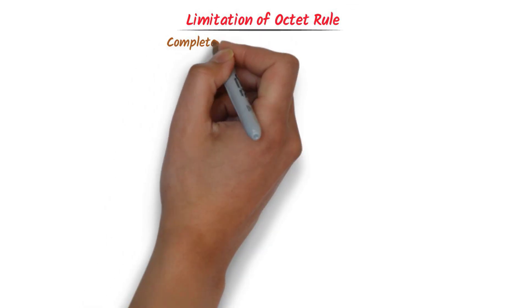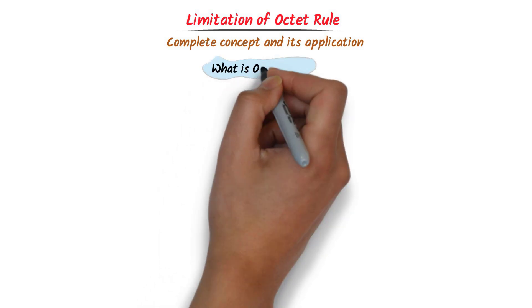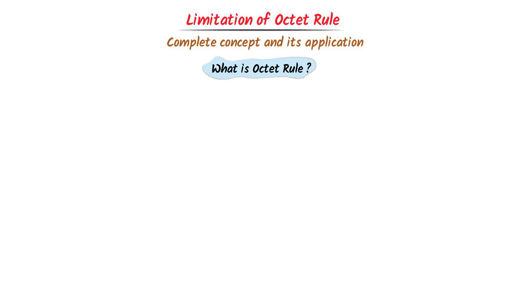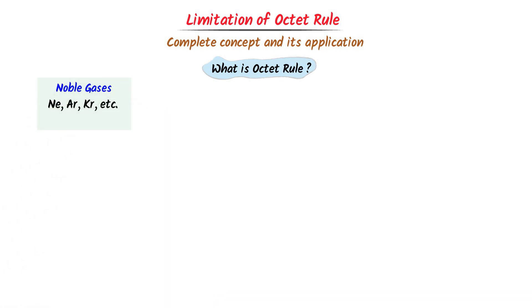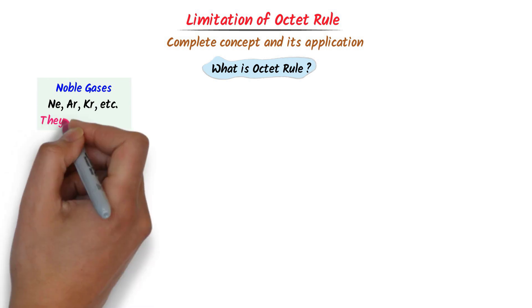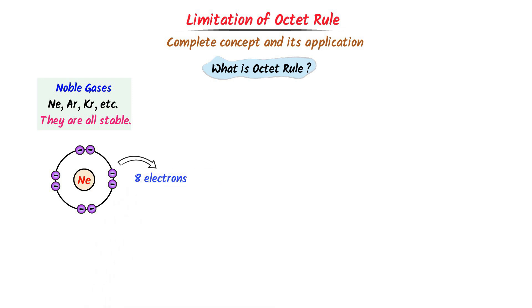We will learn about the limitation of the octet rule. First, we know that noble gases like neon, argon, krypton, etc. are stable gases because they have eight electrons in their outermost shell. From this universal fact, we conclude that any atom which has eight electrons will be stable.